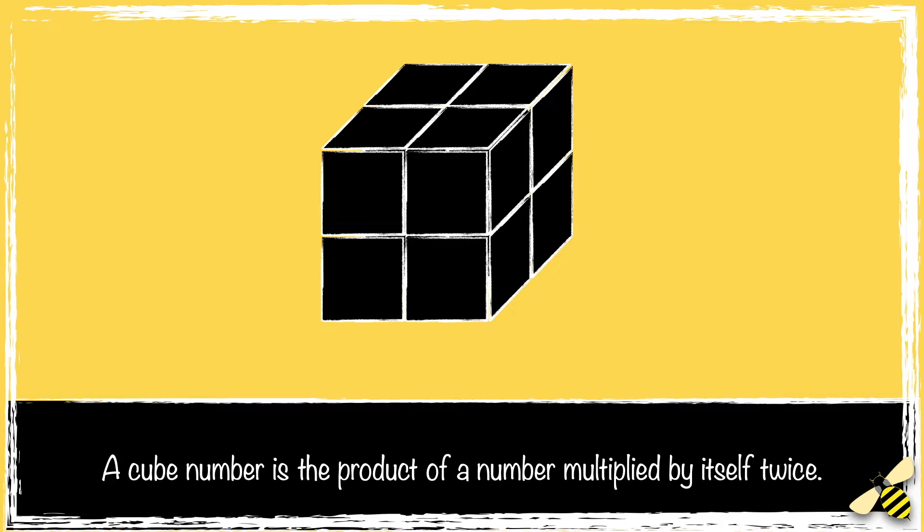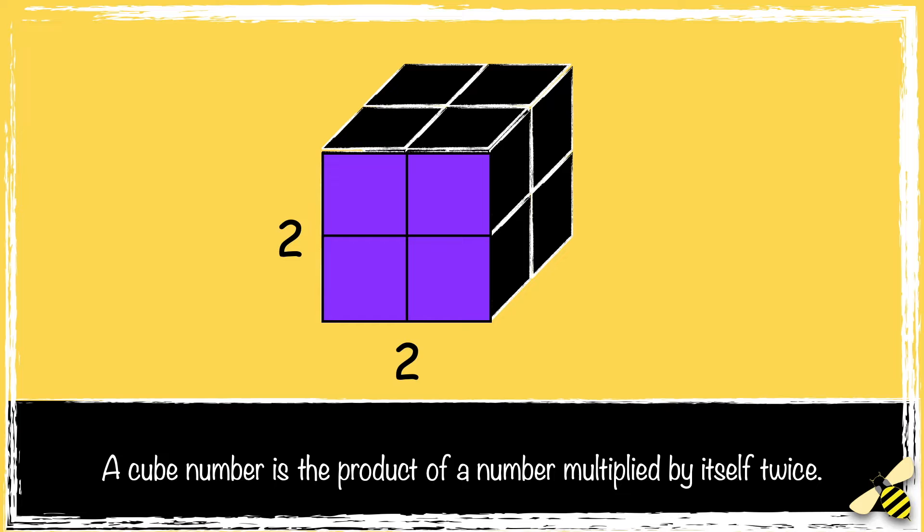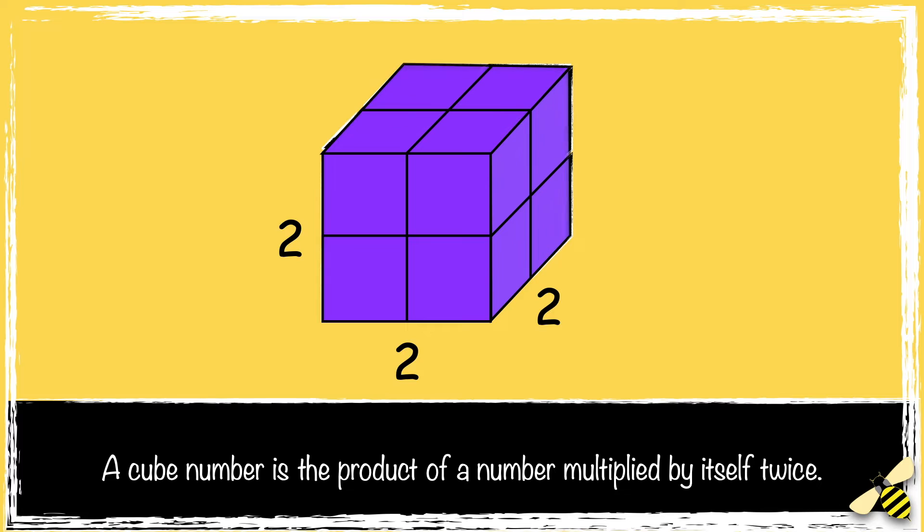The reason it's called a cube number is because it can make a cube. So we have 2 multiplied by 2, which makes the square number 4. But in a cube number we have a third dimension. So 4 times 2 is 8.